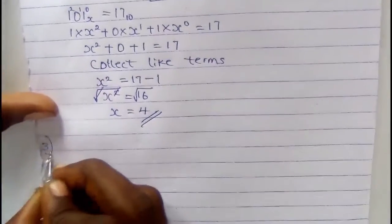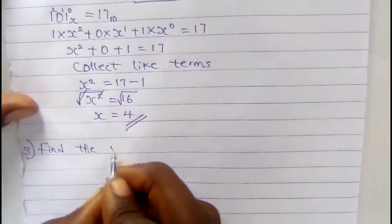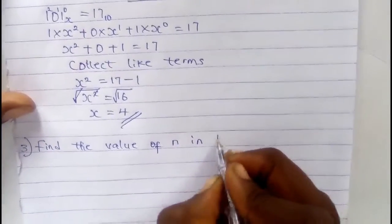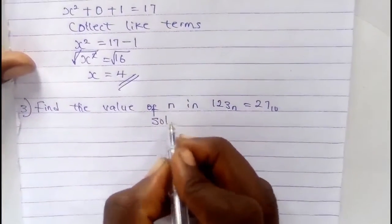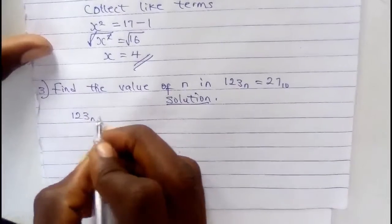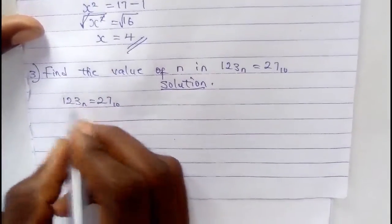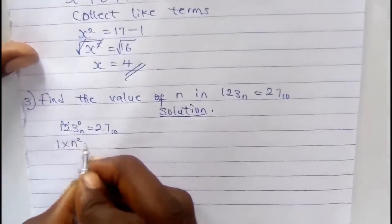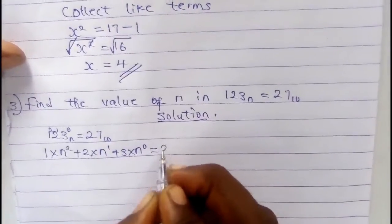Example 3: Find the value of n in 120 to the base of n equals 27 to the base of 10. Solution: 123 to the base of n equals 27 to the base of 10. We only deal with the left side, converting it to base 10. The digit positions are 0, 1, and 2. So: 1 times n to the power of 2, plus 2 times n to the power of 1, plus 3 times n to the power of 0, equals 27.